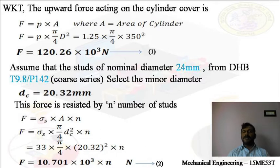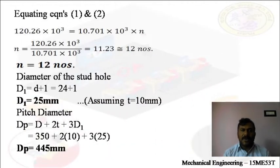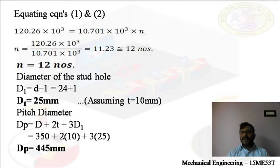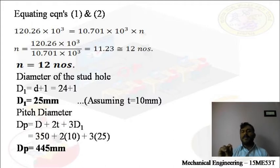Now we are going to equate the two equations. Whatever the upward force acting inside the cylinder cover is resisted by N number of studs. Equating equations 1 and 2: 120.26 × 10³ = 10.701 × 10³ × N. Solving this, you will get N = 11.23. This is a fraction number. If you get a fraction or odd number, we will choose the next even number for the number of studs or bolts. So N = 12 studs.